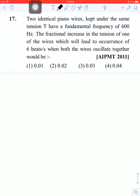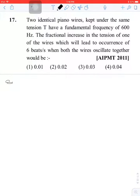Two identical piano wires kept under the same tension T have a fundamental frequency of 600 hertz. The fractional increase in the tension of one of the wires which will lead to occurrence of 6 beats per second when both wires oscillate together would be - okay, let's solve. We have two wires together.